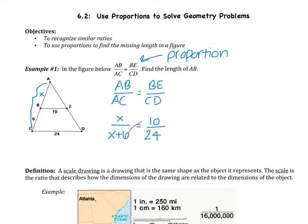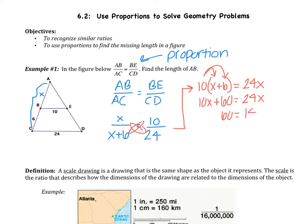Now you have this proportion. Next step would be to cross multiply. When you cross multiply, you have to make sure you distribute properly. You would get 10 times x plus 6 would equal 24 times x. Make sure you distribute your 10. It's really 10x plus 60 equals 24x. You would get 60 equals 14x. Divide by 14. x would be 30 over 7.